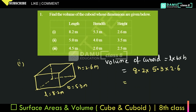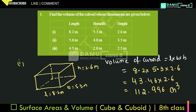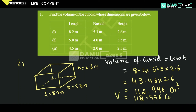So 8.2 multiplied by 5.3 gives 43.46, and then 43.46 into 2.6 gives 112.996 meter cube. So the volume is 112.996 cubic meters.